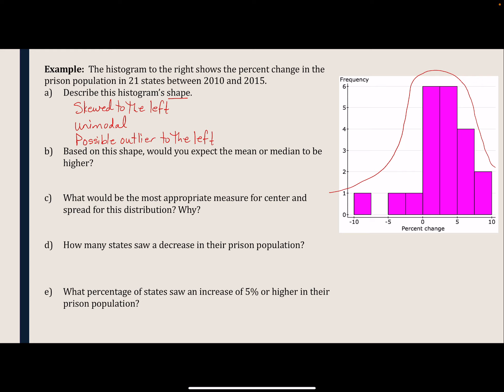Part B asks: based on this shape, would you expect the mean or the median to be higher? Since this distribution is skewed to the left, the mean is being pulled to the left toward the smaller values. The median is not going to be affected by the skew, which means the median will be higher.